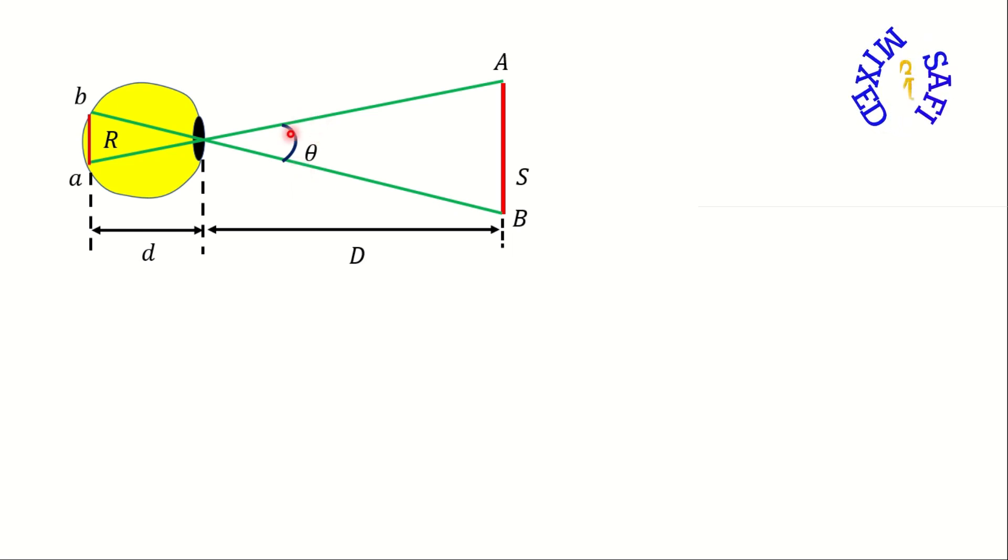This angle depends on the original size S of the object and on the distance capital D of the object from the eye. Now we can easily prove this link by applying trigonometric relation to the figure. Since the figure can be put into the form of a right angle triangle AMN with angle theta by 2 and height S divided by 2, from trigonometry we know that the ratio of perpendicular and base of a right angle triangle equals tangent of the angle.